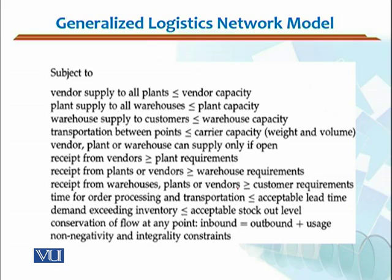The problem would obviously be minimized by an organization subject to the following constraints. First: vendor supply to all plants should be less than or equal to the vendor capacity. Second: plant supply to all warehouses should be less than or equal to the plant capacity. Third: warehouse supply to all customers should be less than or equal to the warehouse capacity.